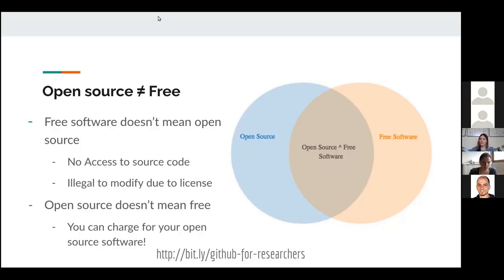This is not great for science. On the other hand, open source doesn't mean free. So for those of you who are producing research software, just because you're making your software open source, it doesn't mean it has to be free software. The intersection of these two is often known as free and open source software, or FLOSS — free/libre open source software — and this refers to software that's both open and free.